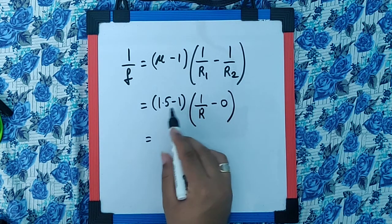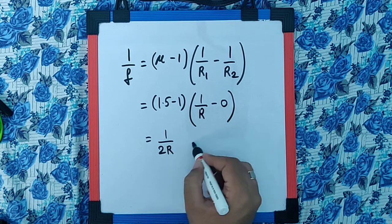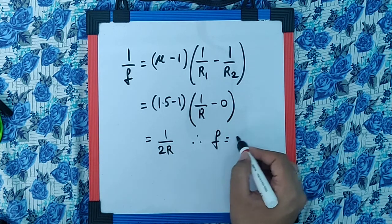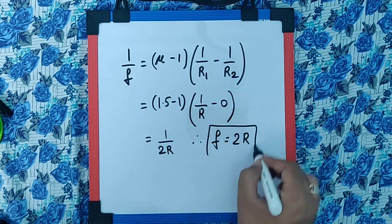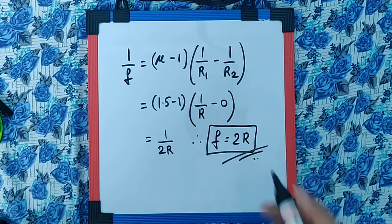So this becomes 0.5/R or 1/2R, and therefore the focal length equals 2R. That is your final answer.